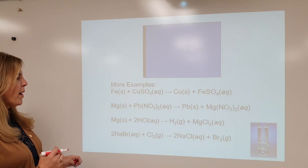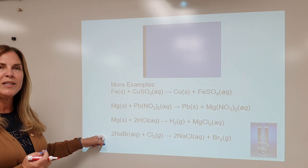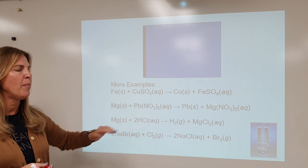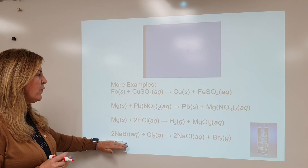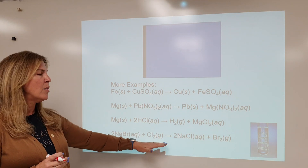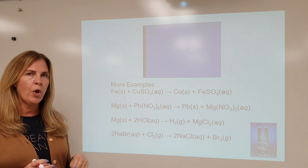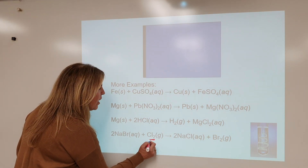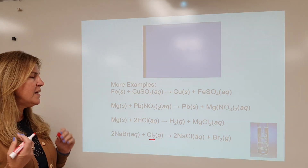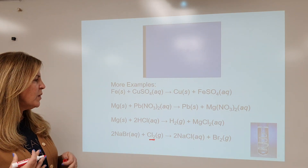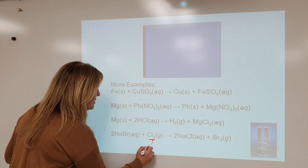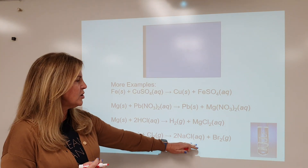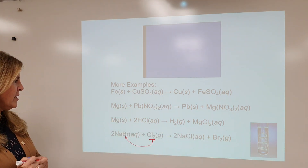Sodium bromide plus chlorine — we tricked you. We've been seeing element plus compound, and then suddenly we have compound plus element. Does that make any difference? No — still single displacement. There's another difference here: our elemental molecule, chlorine, is not a metal. So in a single displacement reaction, a non-metal is going to replace the element similar to it — the non-metal in the compound. You're going to get sodium chloride and bromine as your products.